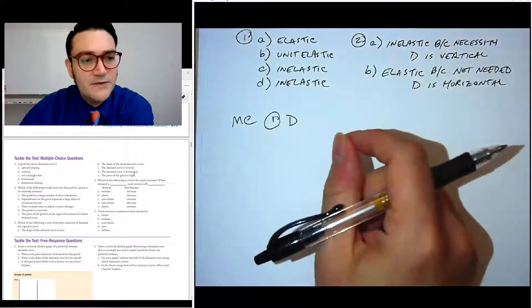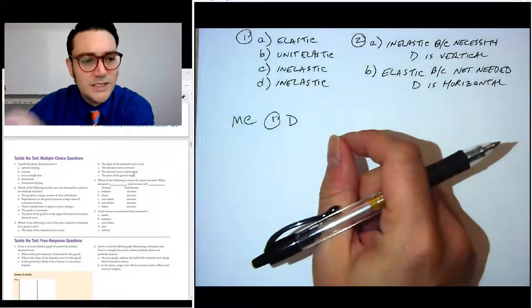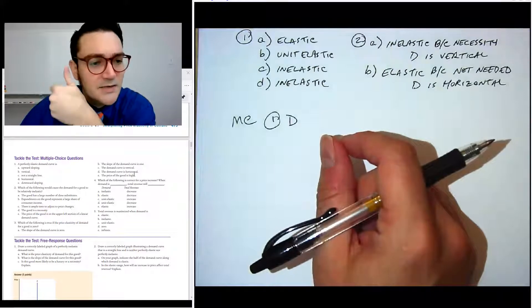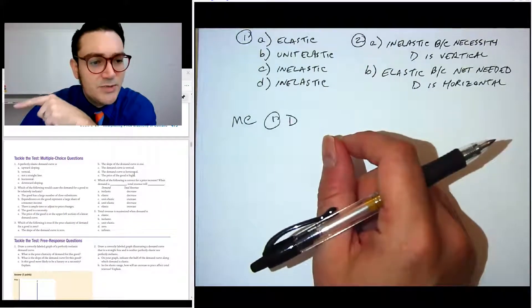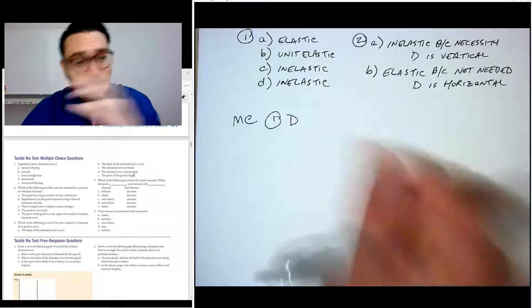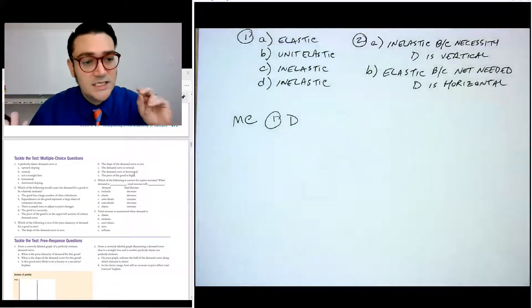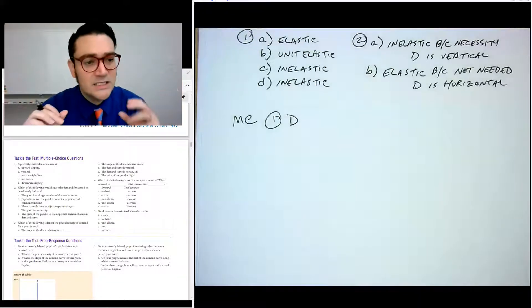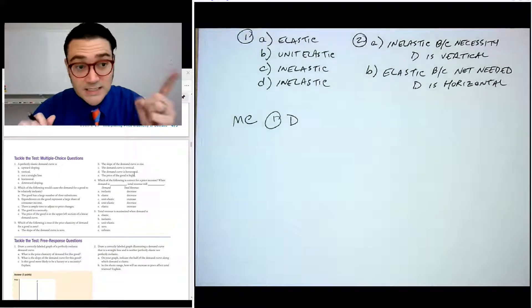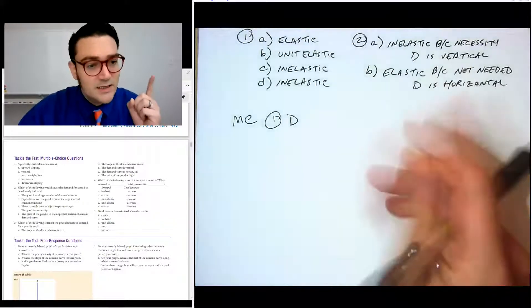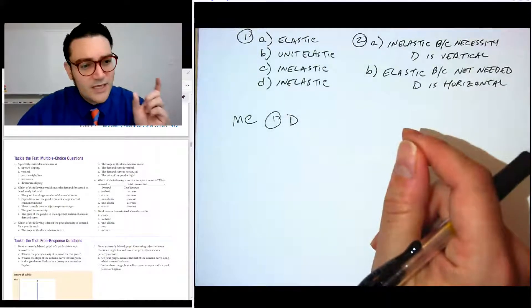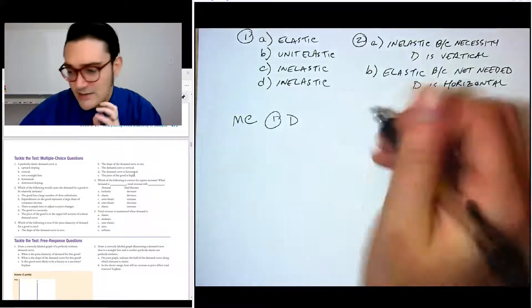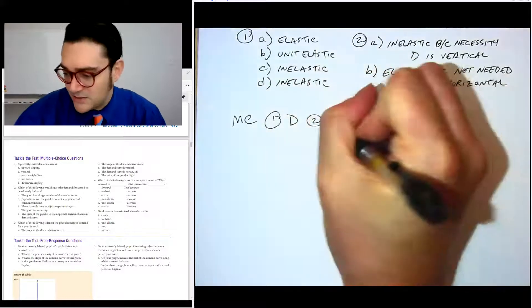Number two, which of the following would cause the demand for a good to be inelastic. So it's going to be a small part of their income, very little substitutes. A is not right. B, expenditures on a good represent a large share of their income. No, because that would make it more elastic. C, there's ample time to adjust. The more time there is, the more elastic it is. D, the good is a necessity. That's it. Because it's inelastic. E, the price of a good is in the upper left. I don't even know what E means. D is the correct answer.